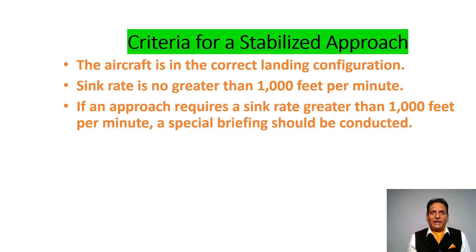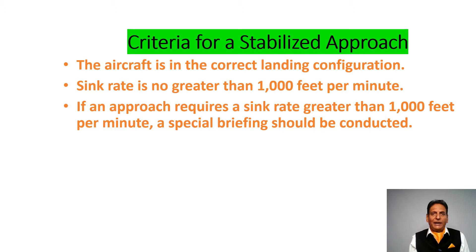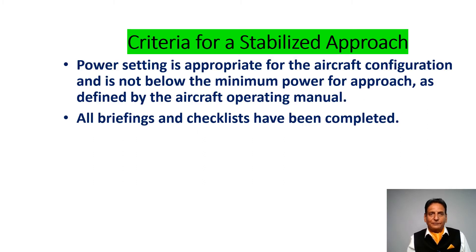The aircraft should be in the correct landing configuration. Sink rate should not be more than 1,000 feet per minute, and if an approach requires a sink rate greater than 1,000 feet per minute, a special briefing should be conducted. Landing gear should be in the correct position. Power setting should be appropriate for the aircraft configuration and not below the minimum power for approach as defined by the aircraft operating manual. All briefings and checklists should have been completed.